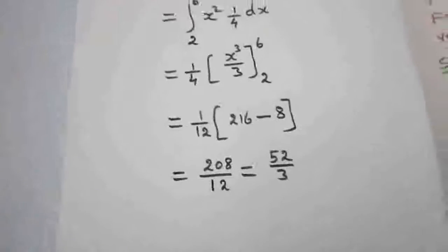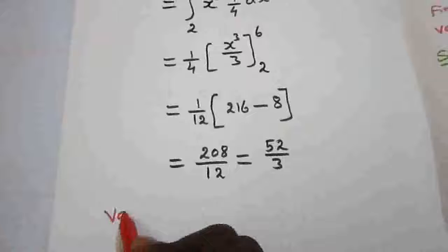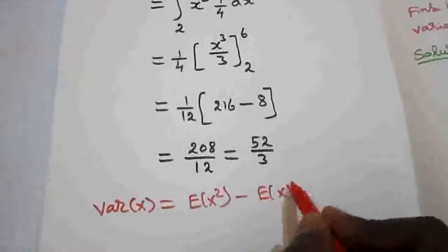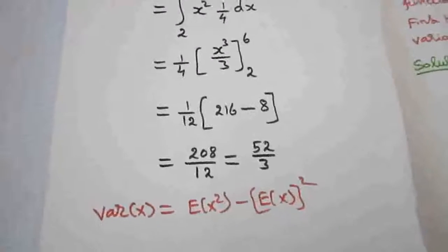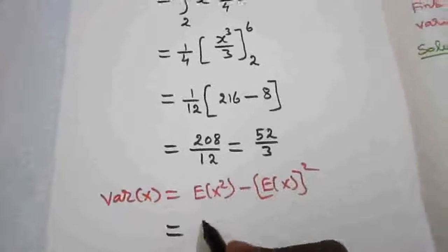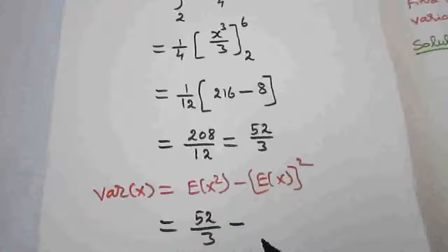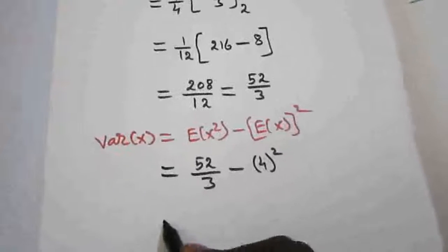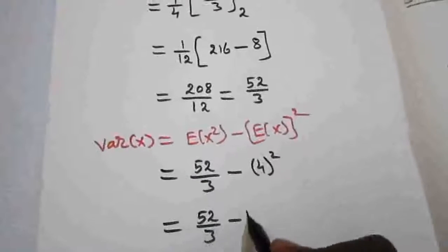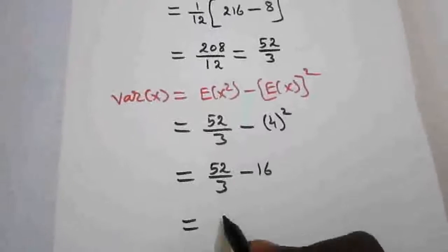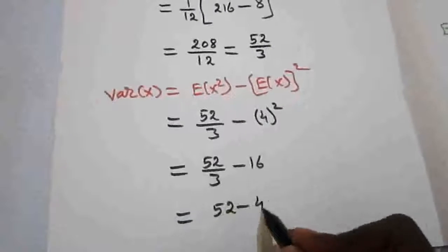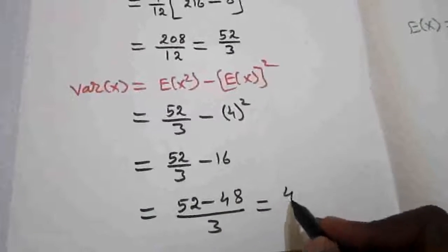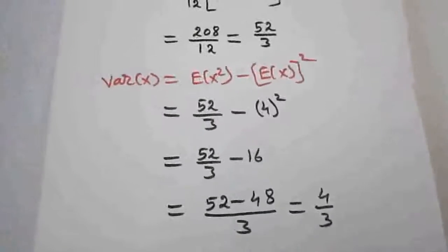We want the variance of x. The formula for variance is: Var(x) = E(x²) − [E(x)]². We have E(x²) = 52/3 and E(x) = 4, so [E(x)]² = 16. Therefore Var(x) = 52/3 − 16 = 52/3 − 48/3 = 4/3. So the variance of x is 4/3.